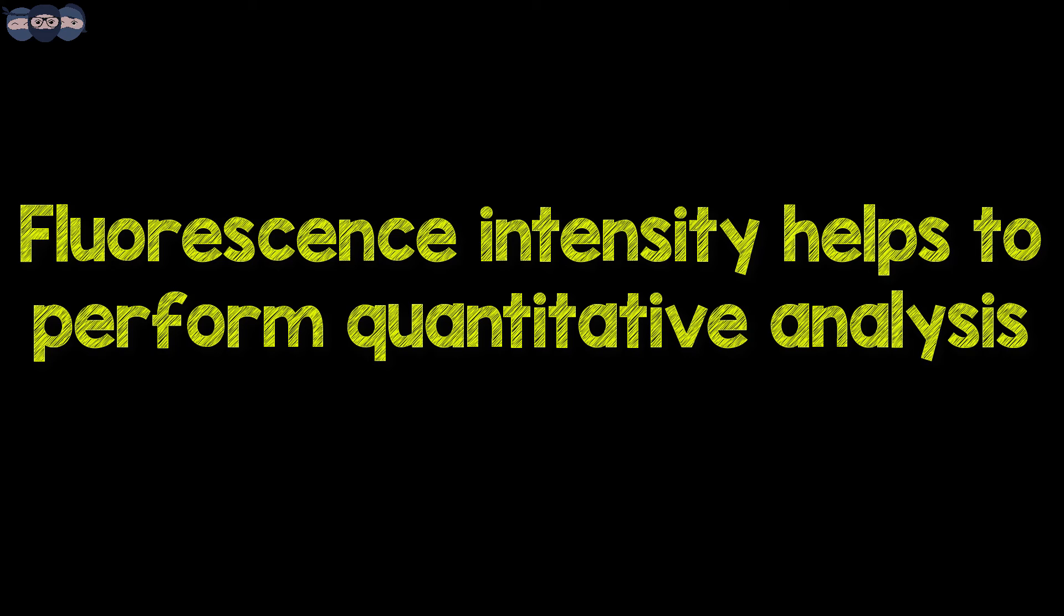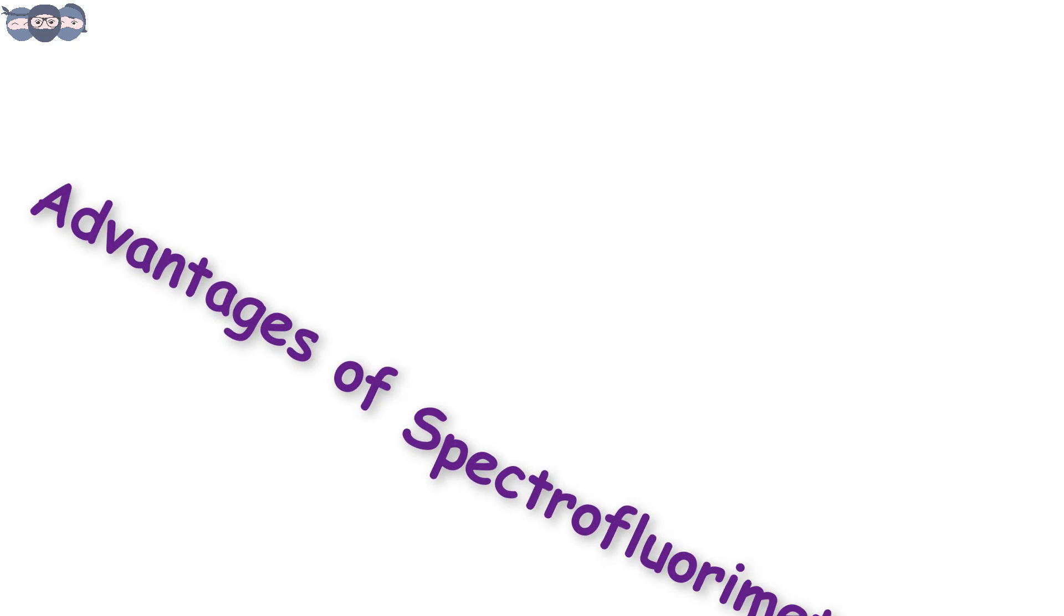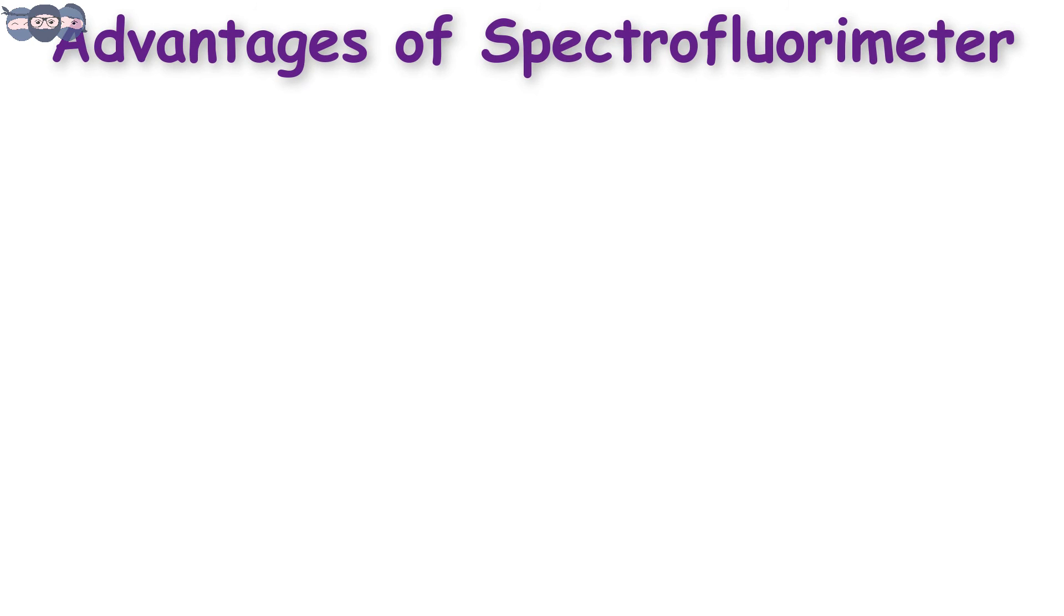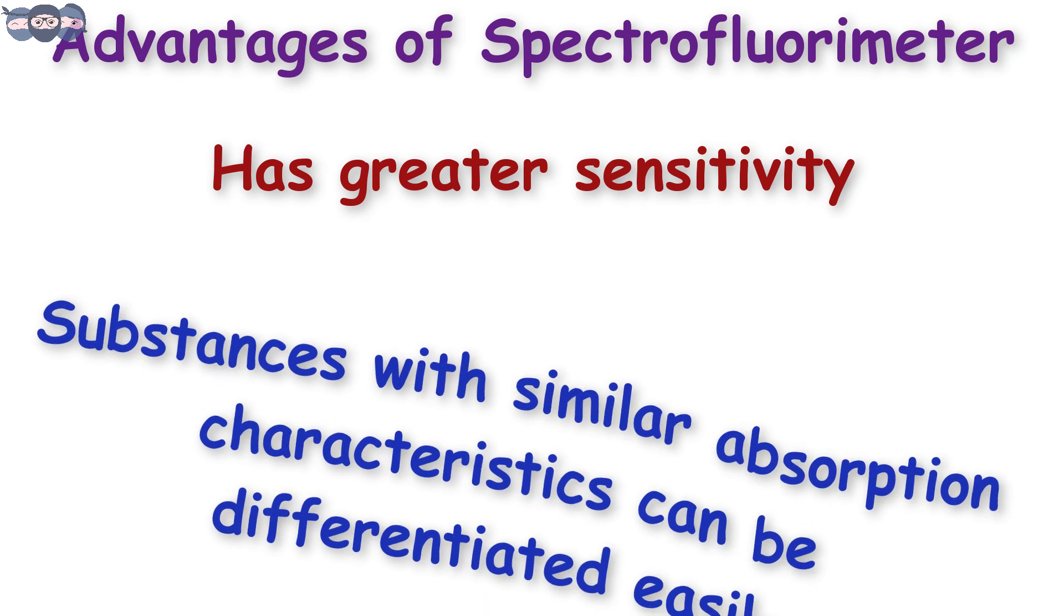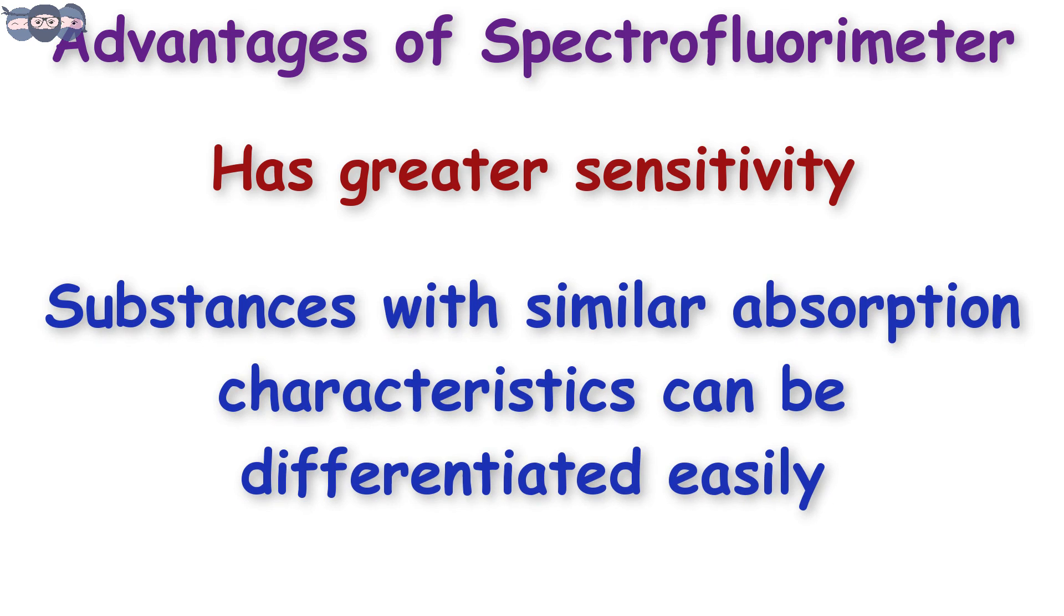The intensity of fluorescence is dependent on the number of particular molecules or electrons being present in the sample. Thus intensity helps in performing quantitative analysis of the sample. This was the working of the spectrofluorimeter. The advantage of using a spectrofluorimeter is greater sensitivity is achievable since background signal is zero when compared to absorption measurements. Differences in wavelengths between incident and emitted light help to discriminate between substances having similar absorption characteristics.